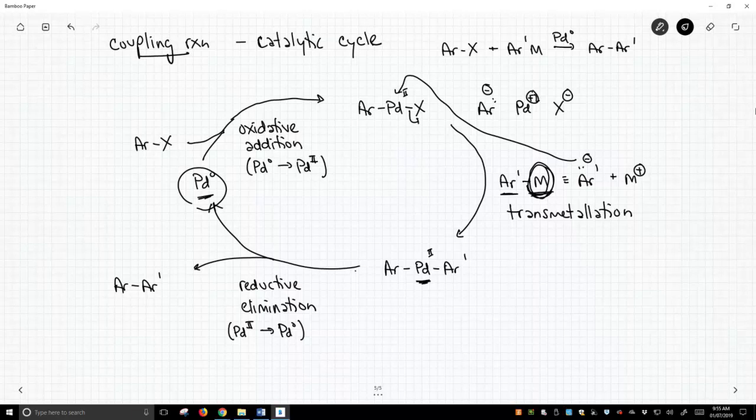So this is the overall catalytic cycle. Let's see an example in the lower right here. So let's say we took chlorobenzene, and we're going to react this with a palladium catalyst, and let's react it with a different aromatic ring.